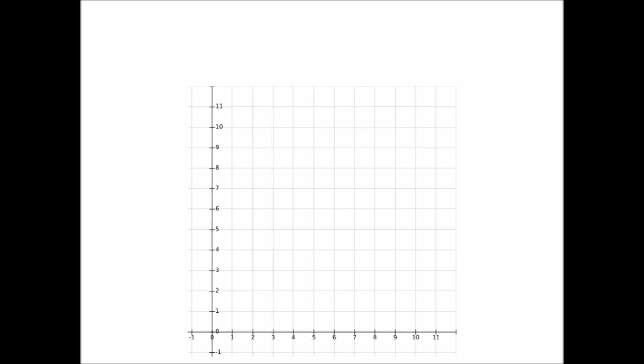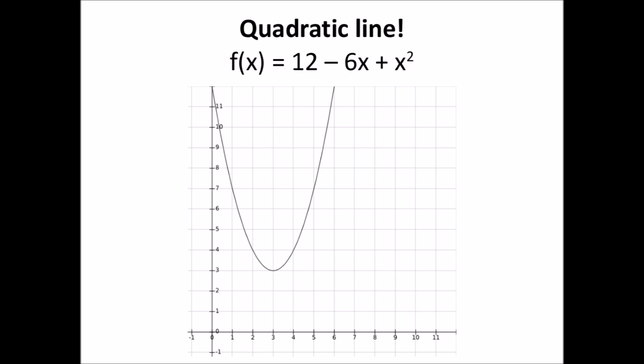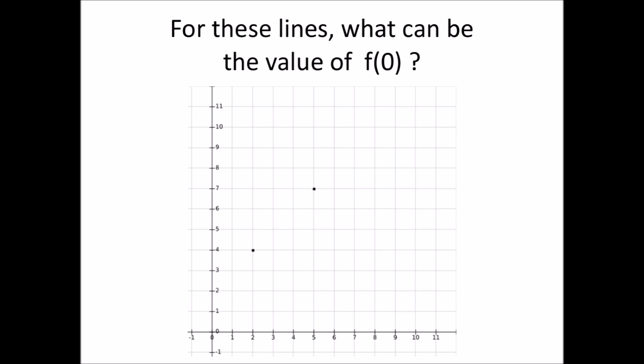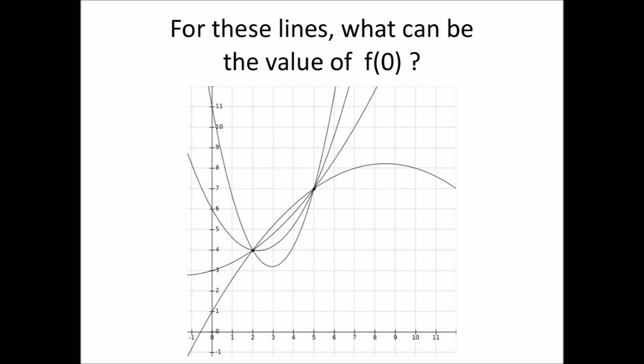Let's go back to our visual story, but now we are going to use slightly more complicated functions: quadratic lines. If we are given two arbitrary points of a quadratic line and ask what line goes through these two points, then like we saw before for linear lines, there is an infinite number of quadratic lines that go through these points. And for any value, we can find the line that goes through that value at f of 0, as well as through the other two points.